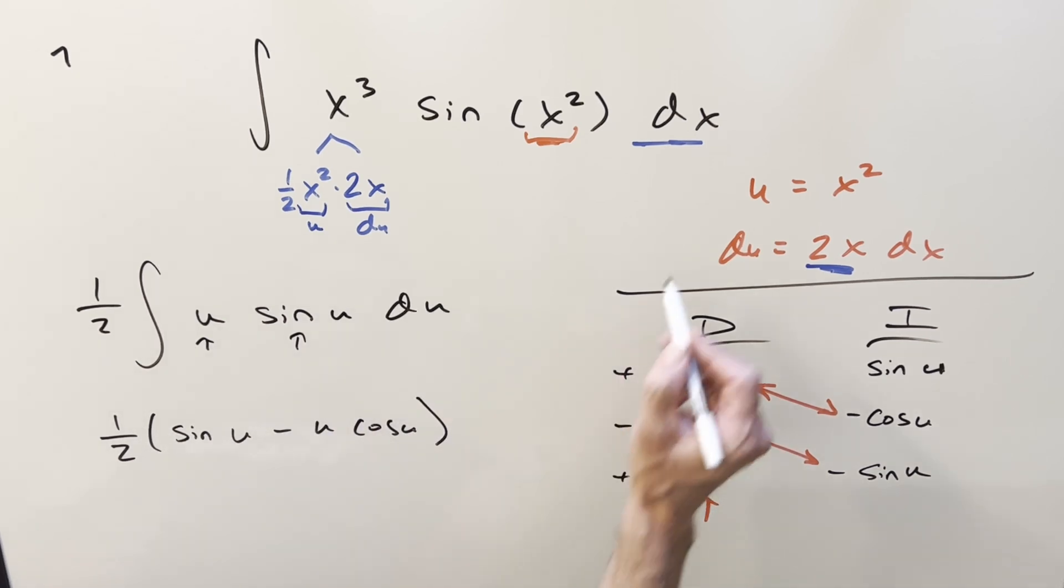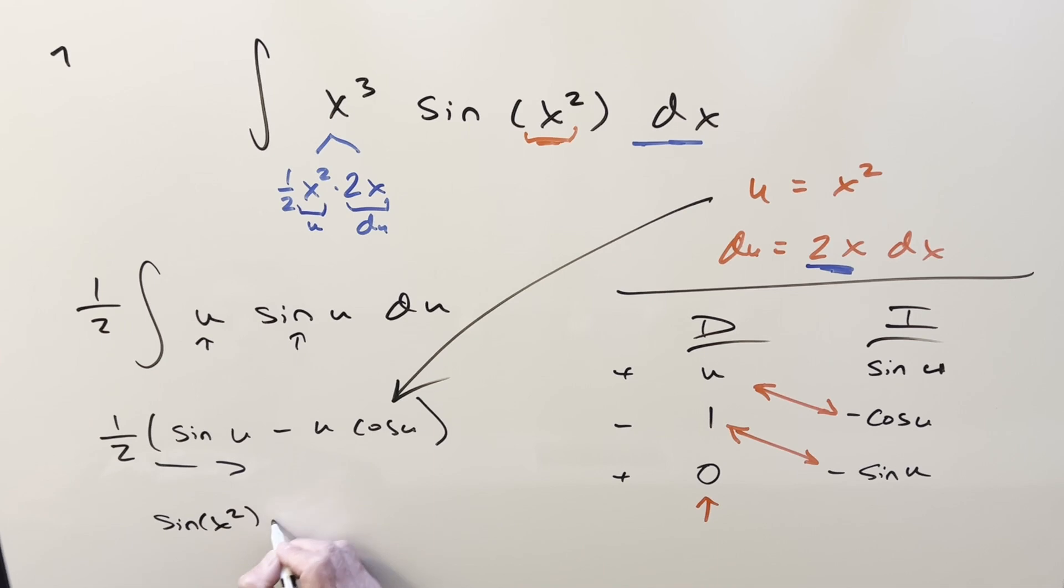And that's everything. We just need to back substitute in order to finish it. So just plug in, I think what I'll do is bring the two into the denominator here. So putting it together for my final solution, we have sine x squared minus x squared cosine x squared all over 2, add a plus c, and that's it.